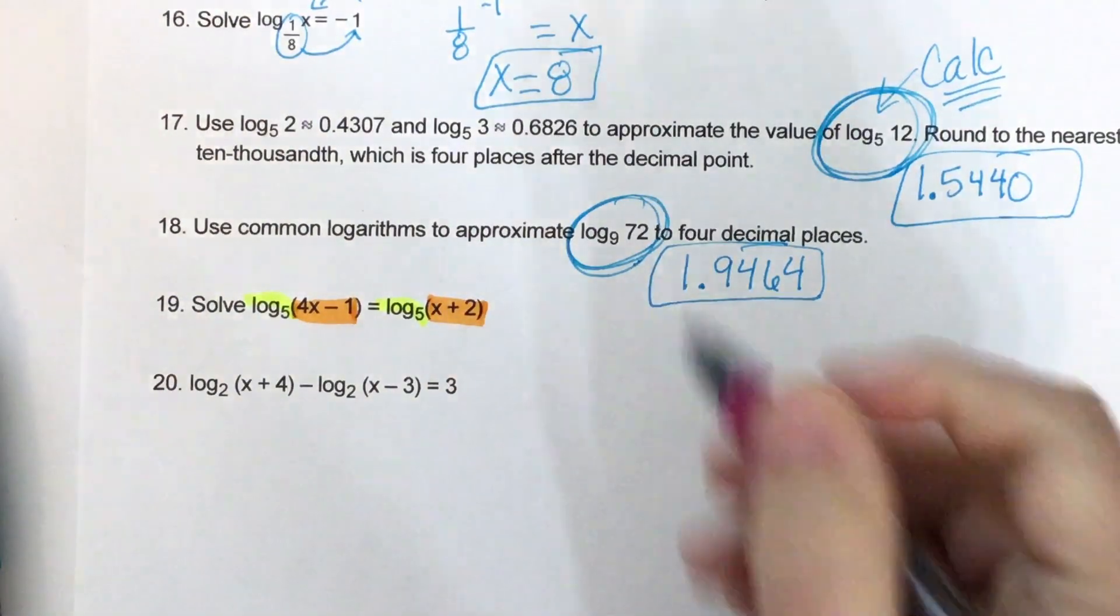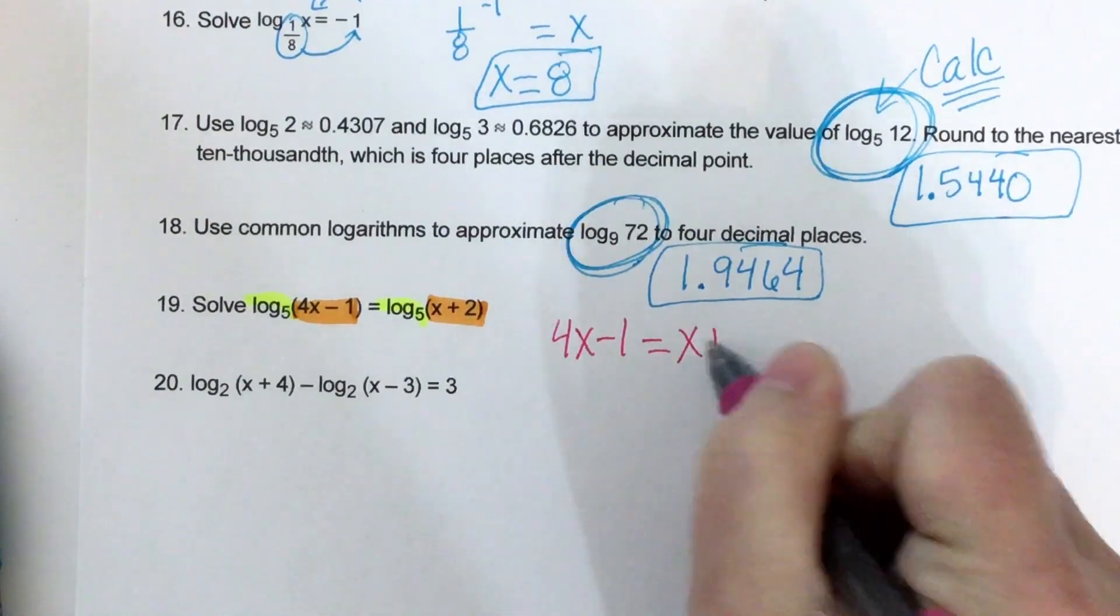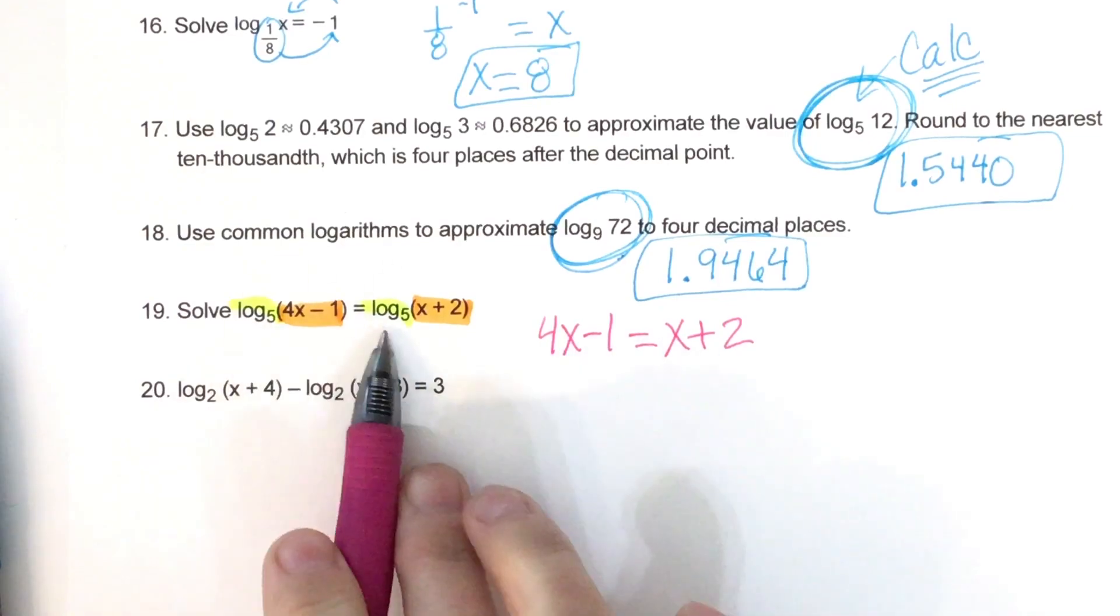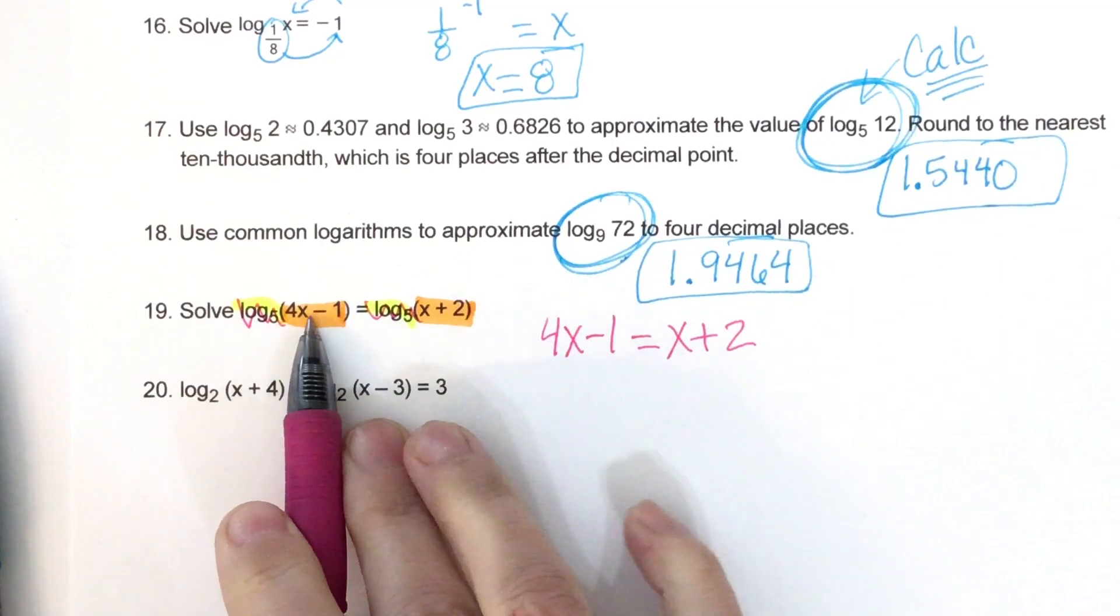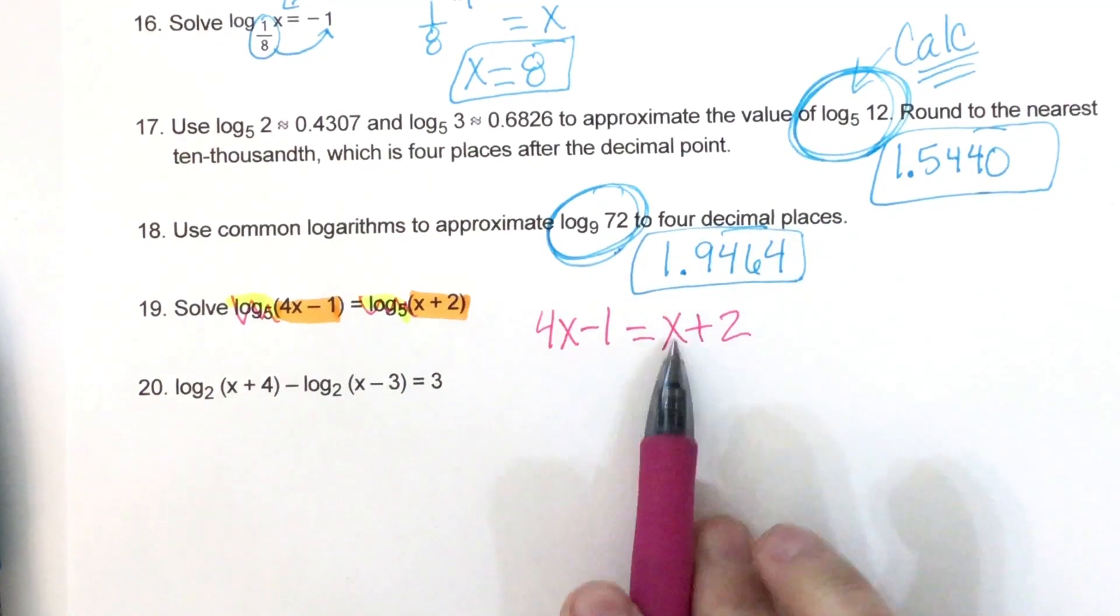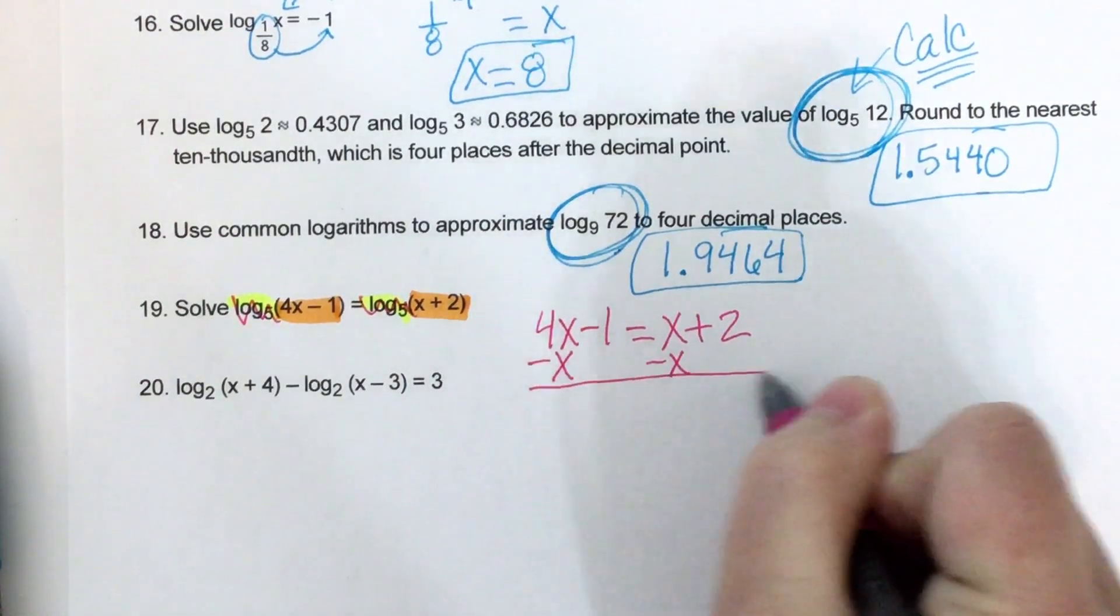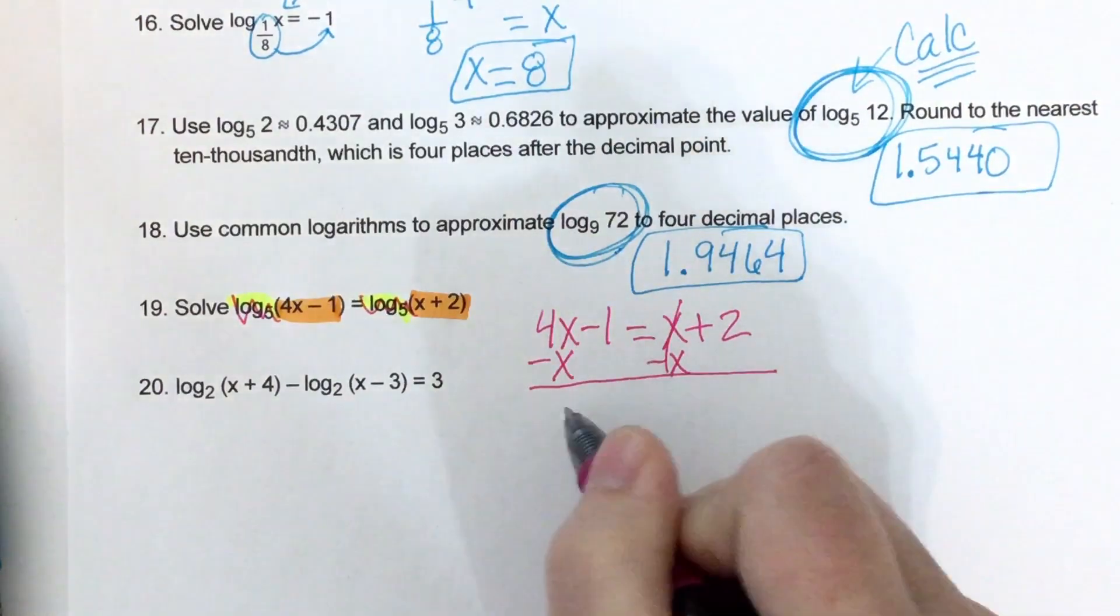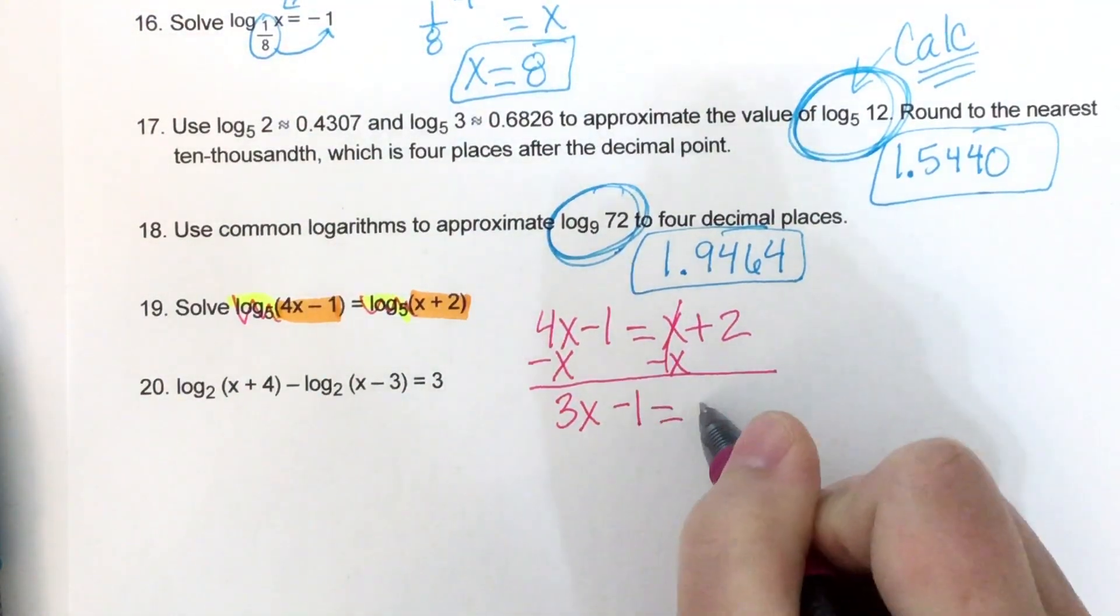4x minus 1 equals x plus 2. So since both sides have log in the same base, it's like those just cancel out. And then you just set the 4x minus 1 equal to x plus 2. And this one's easy. We just need to get x's on the same side. So I'm going to move this positive x by subtracting it. This zero is out. 4x minus x makes 3x. Bring down the minus 1.